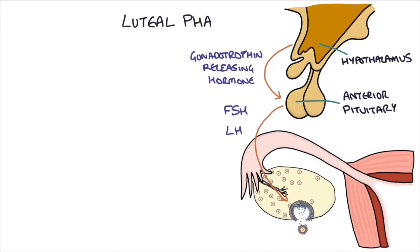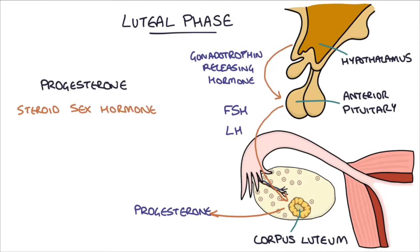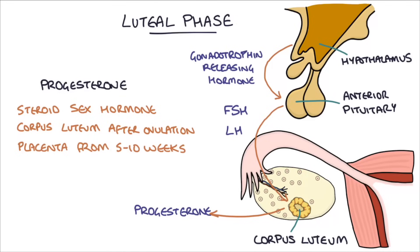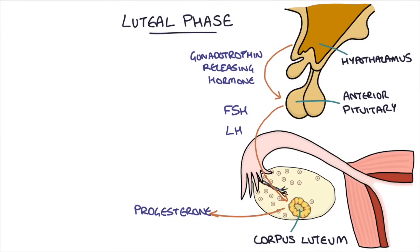Now let's look at the luteal phase of the menstrual cycle. The follicle that released the ovum collapses and becomes the corpus luteum, which secretes high levels of progesterone. Progesterone is a steroid sex hormone produced by the corpus luteum after ovulation; if pregnancy occurs, the placenta will take over production from around five to ten weeks. Progesterone acts on tissues previously stimulated by estrogen — causing thickening and maintaining of the endometrial lining, thickening the cervical mucus to prevent things going in and out of the uterus, and causing a slight rise in body temperature. The corpus luteum also secretes some estrogen.